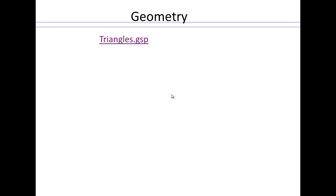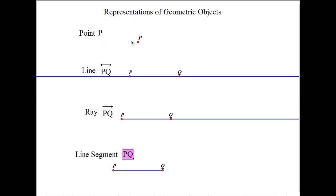In this section, we're going to introduce you to some geometric concepts and notations, some of which you might already be familiar with. If you look at a point, you can represent that as a dot on the paper, and we write that with capital letters like P, Q, R, and so on.